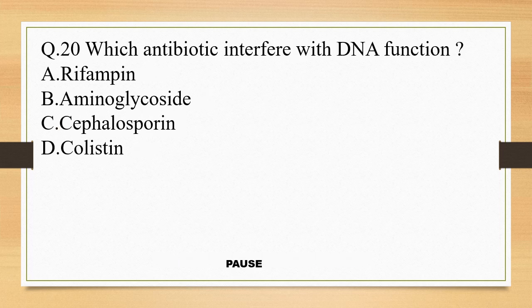Question 20. Which antibiotic interferes with DNA function? Option A, rifampin; option B, aminoglycoside; option C, cephalosporin; and option D, colistin. And the right answer is option A, rifampin.